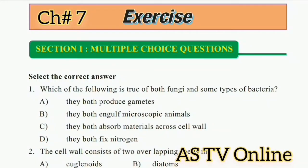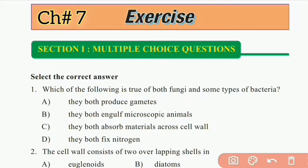Assalamu alaikum, welcome to another video. Federal Board Biology, first year, Chapter 7: Protists and Fungi. Question number one: which of the following is true of both fungi and some types of bacteria? They both produce gametes, they both engulf microscopic animals, they both absorb materials across cell walls, they both fix nitrogen. The right answer is C: they both absorb materials across cell walls.